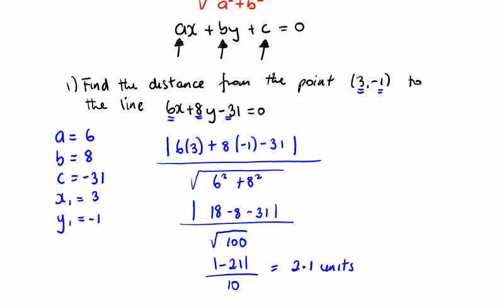This is absolute value, so we take the positive value if it's negative, because we're dealing with distance — we can't have a negative distance. So the answer is 2.1 units.